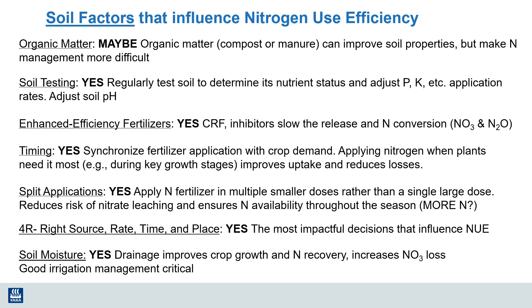And some soil practices that might influence nitrogen use efficiency: Organic matter can improve soil properties, but it makes nitrogen management more difficult. Soil testing? Certainly yes. Enhanced efficiency fertilizers? Yes. Better timing? Certainly yes. Split applications of nitrogen? Yes. But implementing the four R's of nutrient stewardship — right source, rate, time, and place — is the most impactful practice, as the paper by Dr. Yu indicates. Soil moisture? Definitely yes.